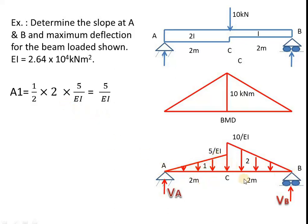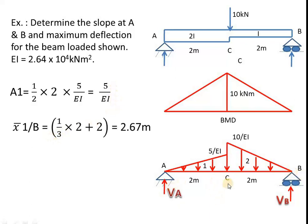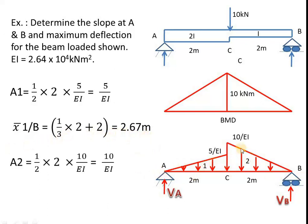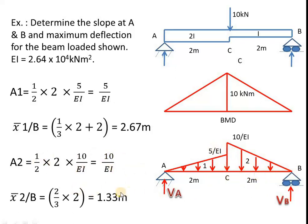Now to calculate VA and VB for the conjugate beam, we have to take the areas and their distances, because we need to take the moment of these areas about B. The loads are the areas of these diagrams. For area A1, it equals half base times height, that is 1/2 × 2 × 5/EI, which gives 5 by EI. The distance x1 bar with respect to B — since I want to take moment about B to calculate VA — is one third of 2 plus 2, giving 2.67 m. Next, the second triangle has area A2 = 1/2 × 2 × 10/EI, giving 10 by EI, and x2 bar is two thirds of 2, giving 1.33 m.